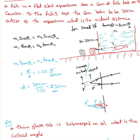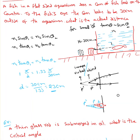Here is another example from optics. A fish in a flat-sided aquarium sees a can of fish food on the counter. To the fish, the can looks to be 30 centimeters outside of the aquarium. What is the actual distance? Here is the aquarium — it is looking straight, and I'm assuming that theta is very small.